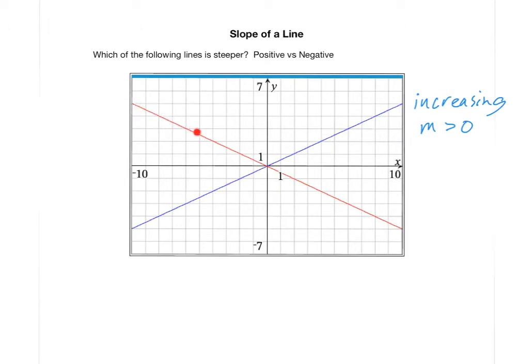Whenever the line is going down from left to right, we consider that line to be decreasing. And for all decreasing lines, we consider the slope to be negative.